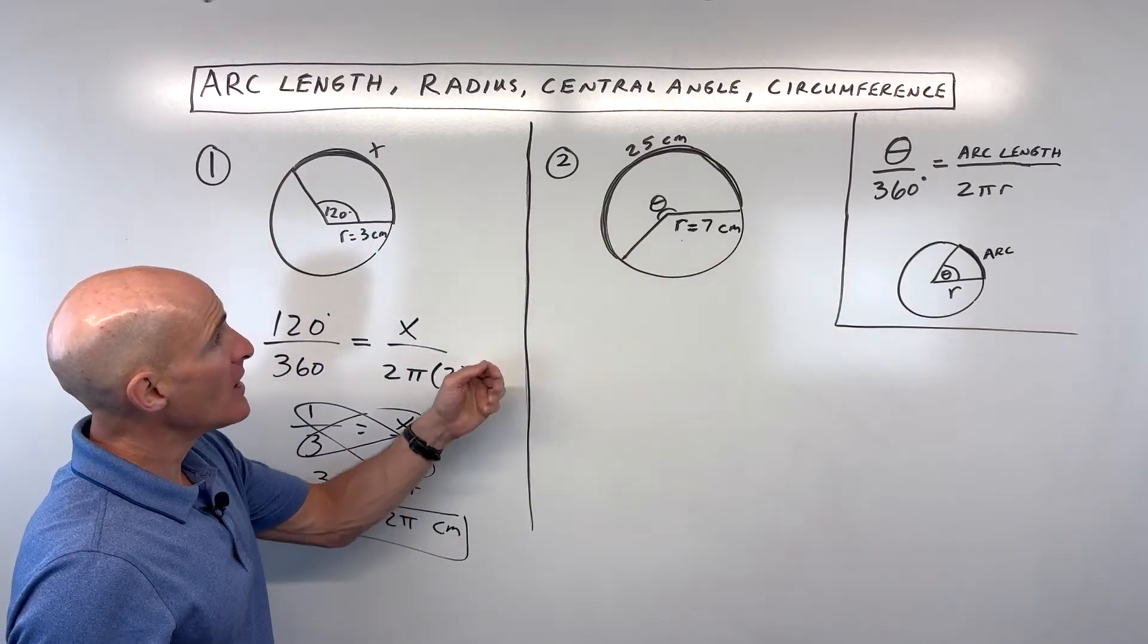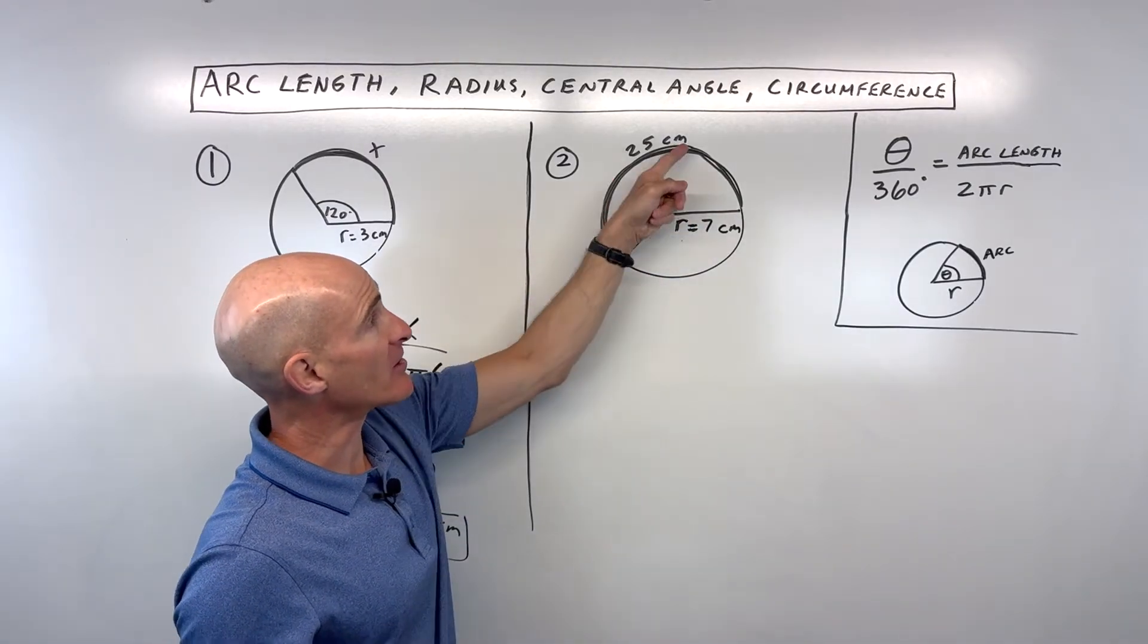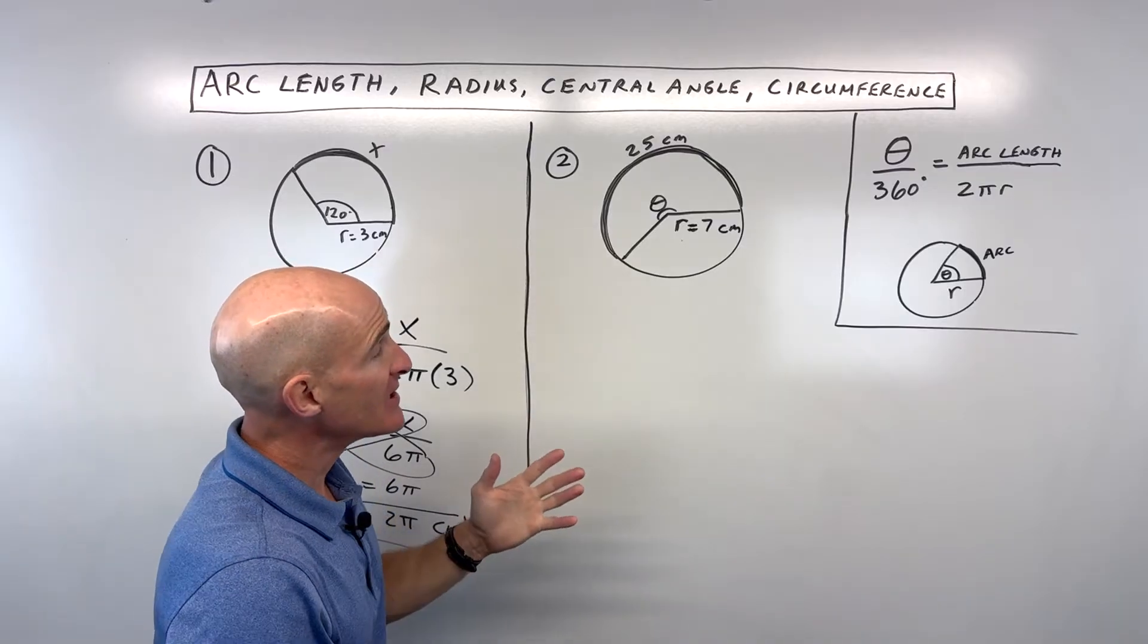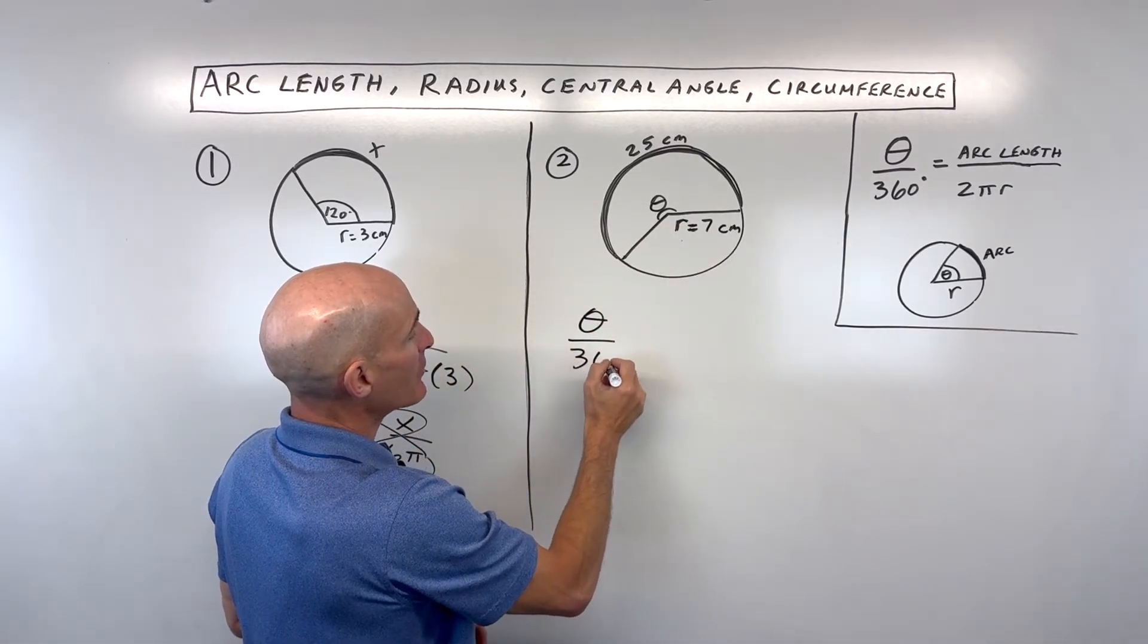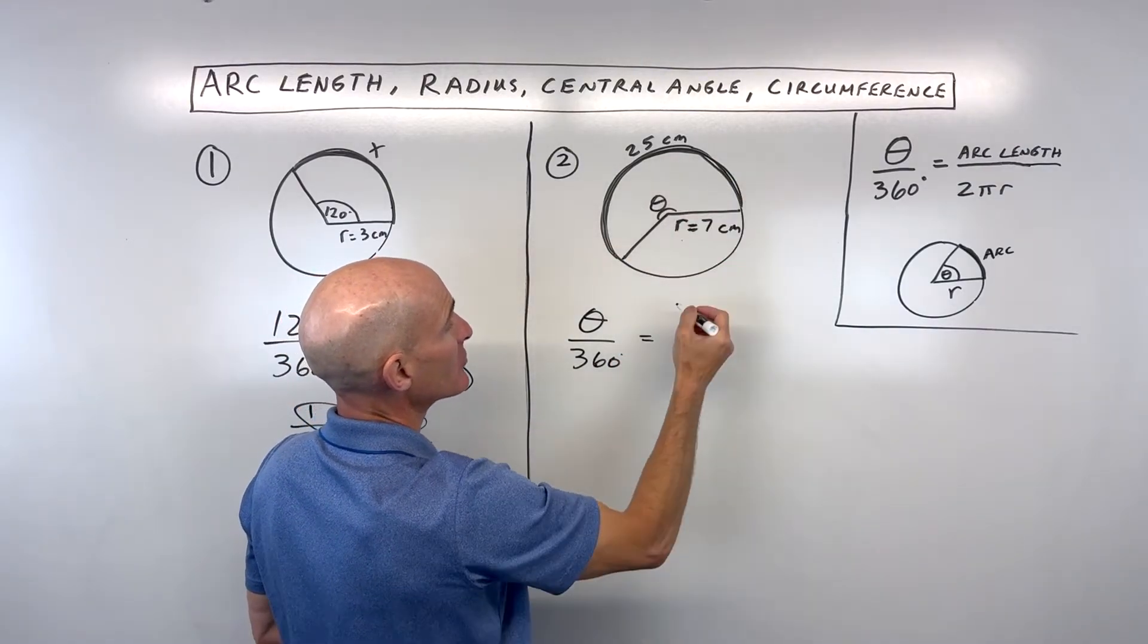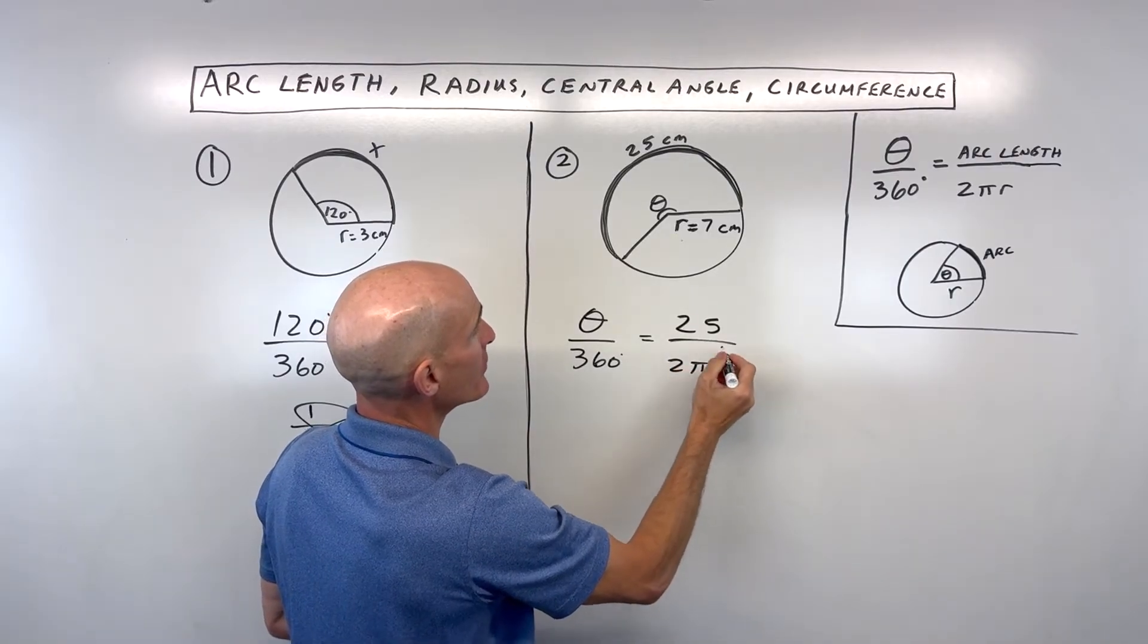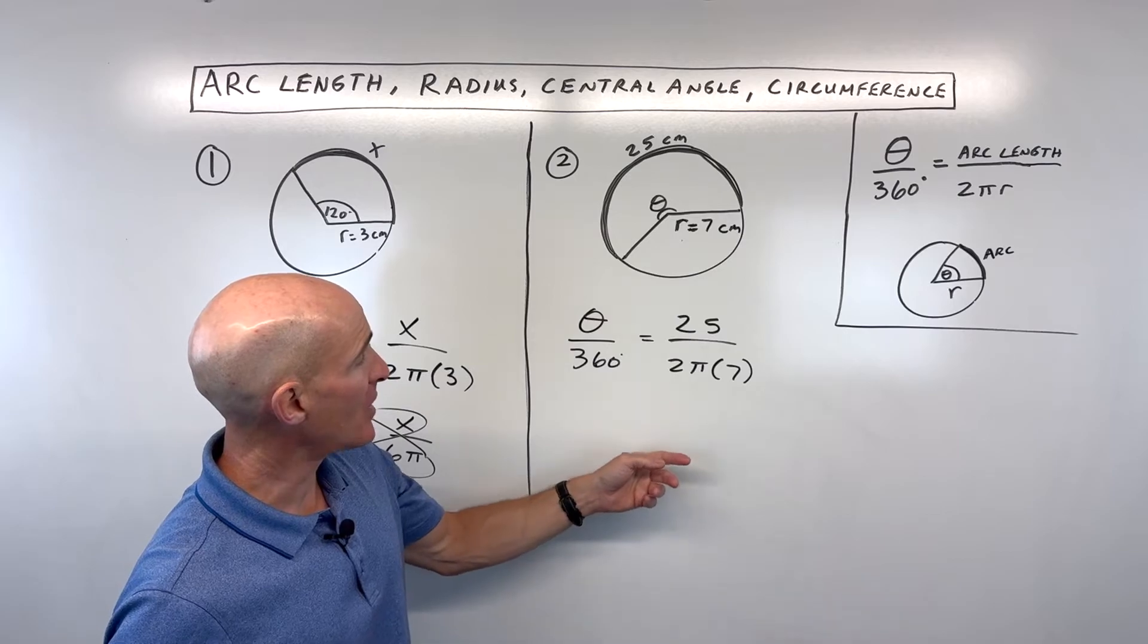Now let's go to number 2. This one, we're solving for the central angle theta, and they're giving us the arc length as 25 centimeters. Same idea. We take that central angle theta divided by 360. That ratio is the same ratio as the arc length, 25, is to the whole circumference, 2πr. 2πr is the formula for the circumference.